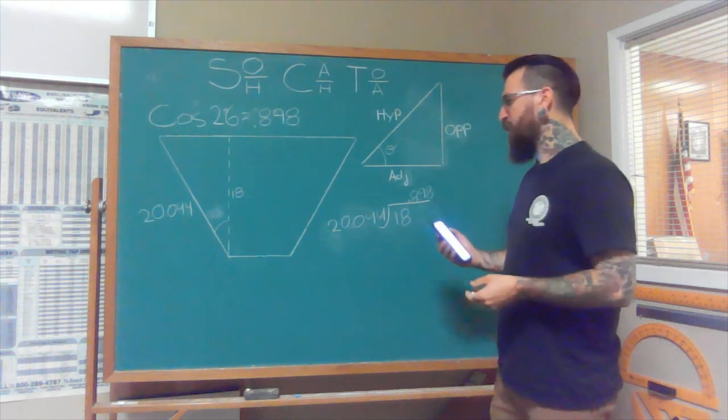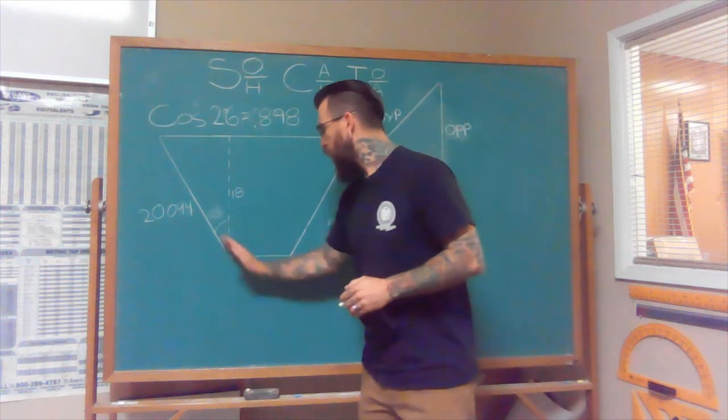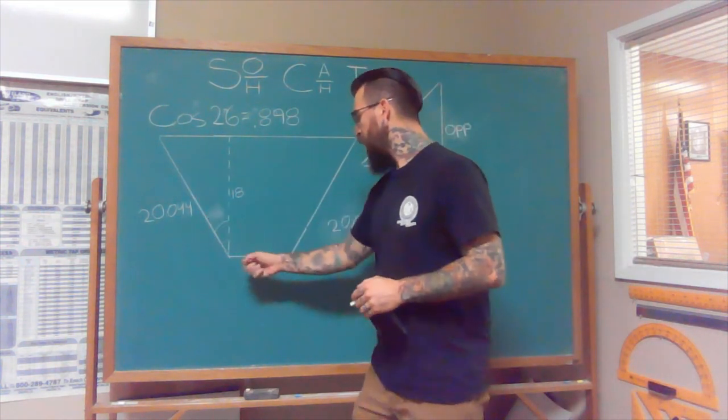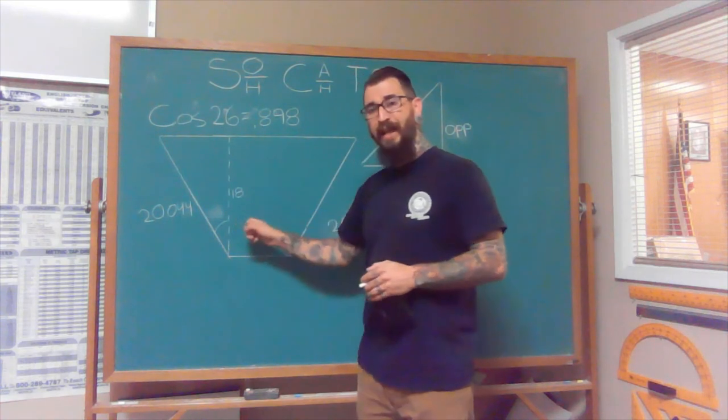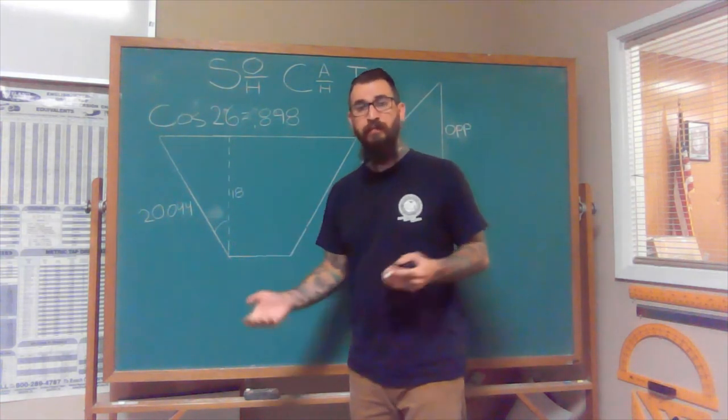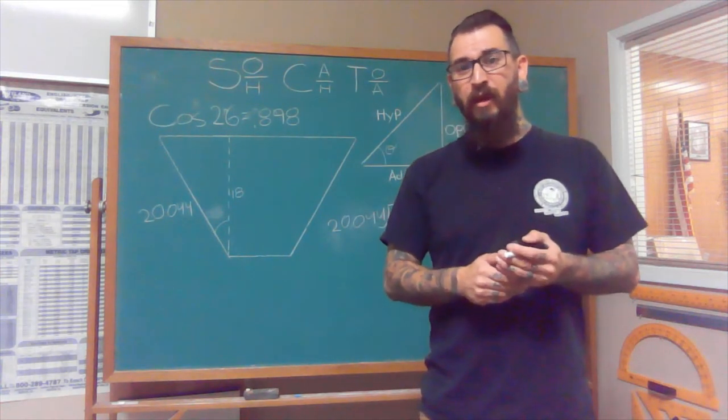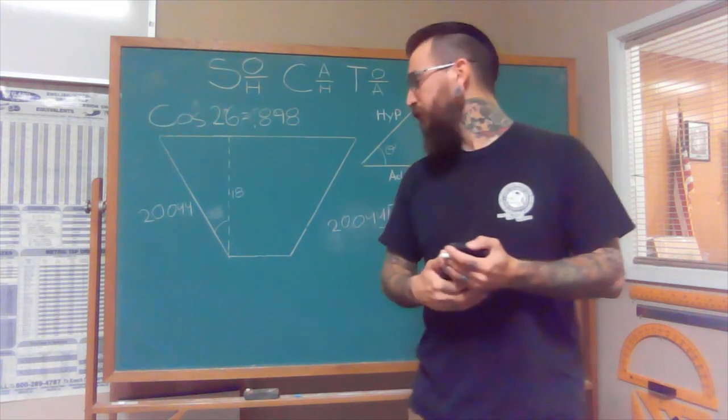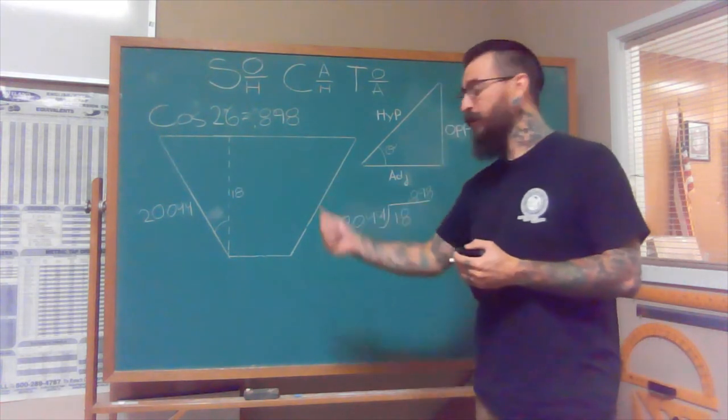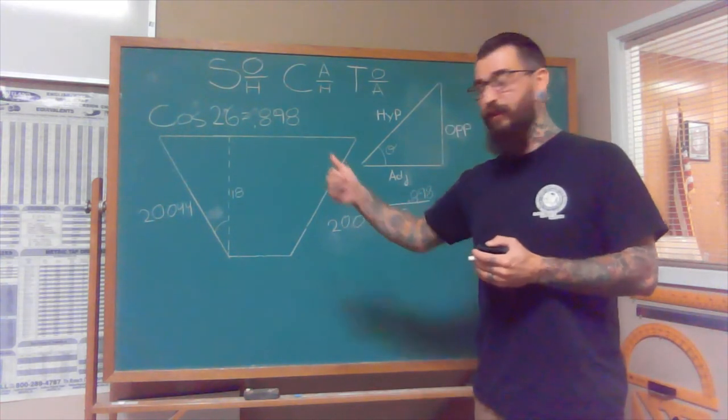Once again, it's our ratio. What we're saying is for every one inch over in this direction, this is going to move 0.898 in that direction. Or pretty much, that's fairly close to 0.875, which is going to be 7/8ths. So for every one inch over, it's going to move up about 7/8ths of an inch.